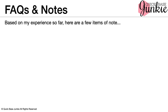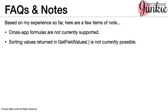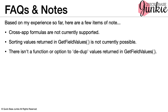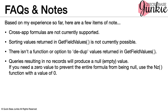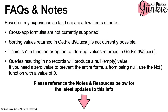Based on my experience so far, here are a few items of note. Cross-app formulas are not currently supported. Sorting values returned in getFieldValues is not currently possible. There isn't a function or option to dedupe the values returned in a getFieldValues list. Queries resulting in no records will produce a null or empty value. If you need a zero value to prevent the entire formula from being null, use the nz function with a value of zero. I share how to use the nz function in my video demo, Rank Records Using the Size Query Function. Please be sure to reference the notes and resources below for the latest updates to any of this information.